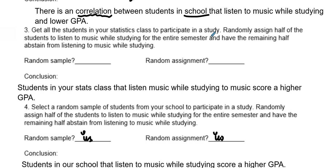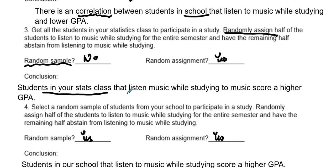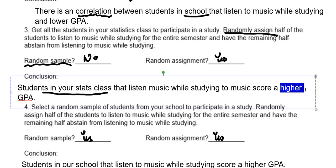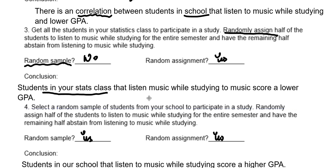Study 3: Get all students in your stats class to participate. Randomly assign half the students to listen to music while studying for the entire semester and the remaining half to abstain from listening to music while studying. Was there a random sample? No — so there is no generalization. Was there random assignment? Yes — so we can draw cause and effect. At least with students in our stats class, listening to music causes a lower GPA. There is a cause and effect.